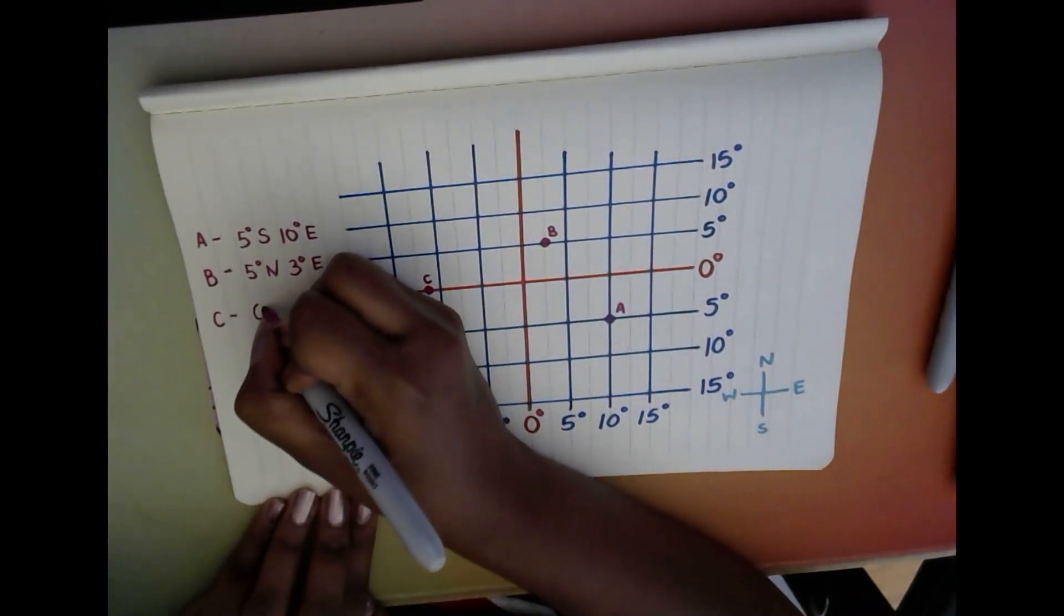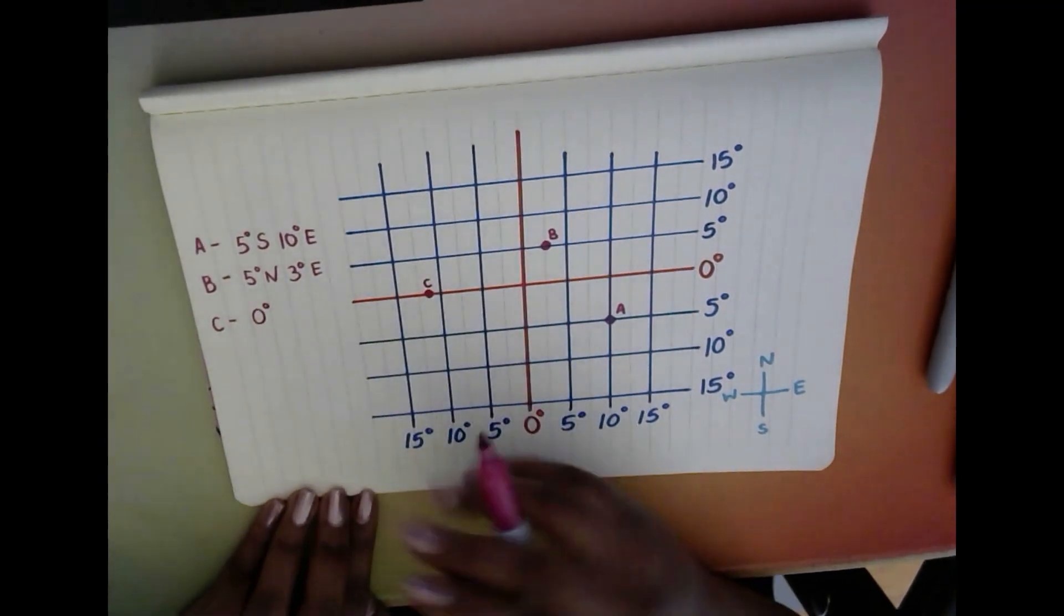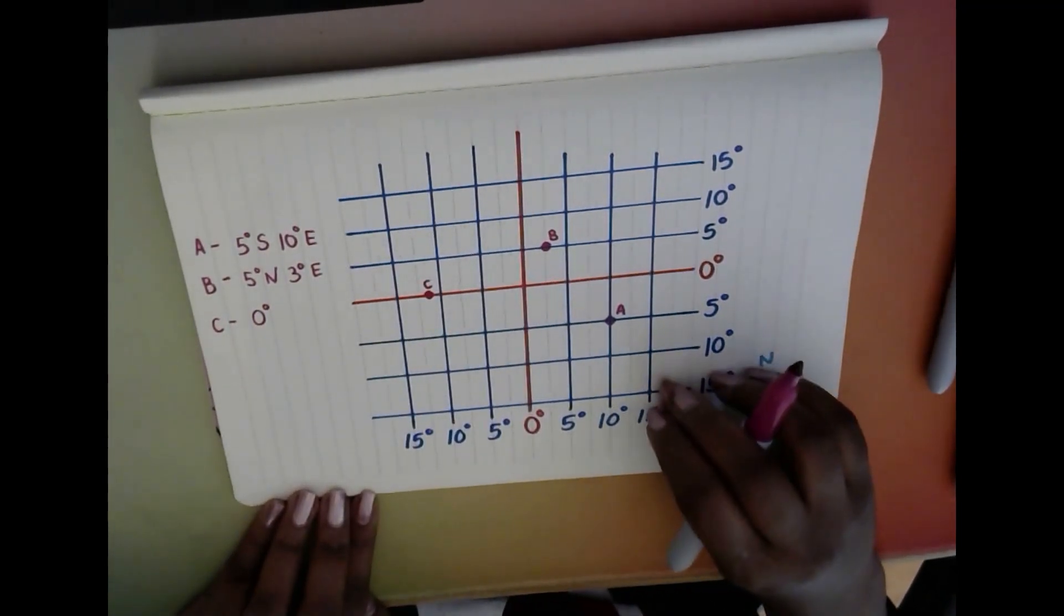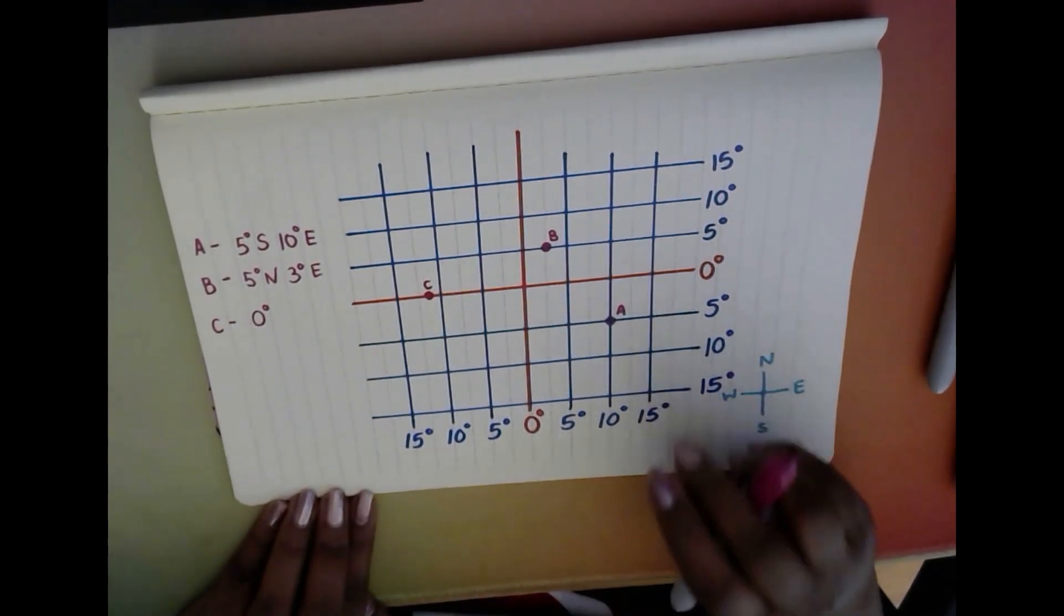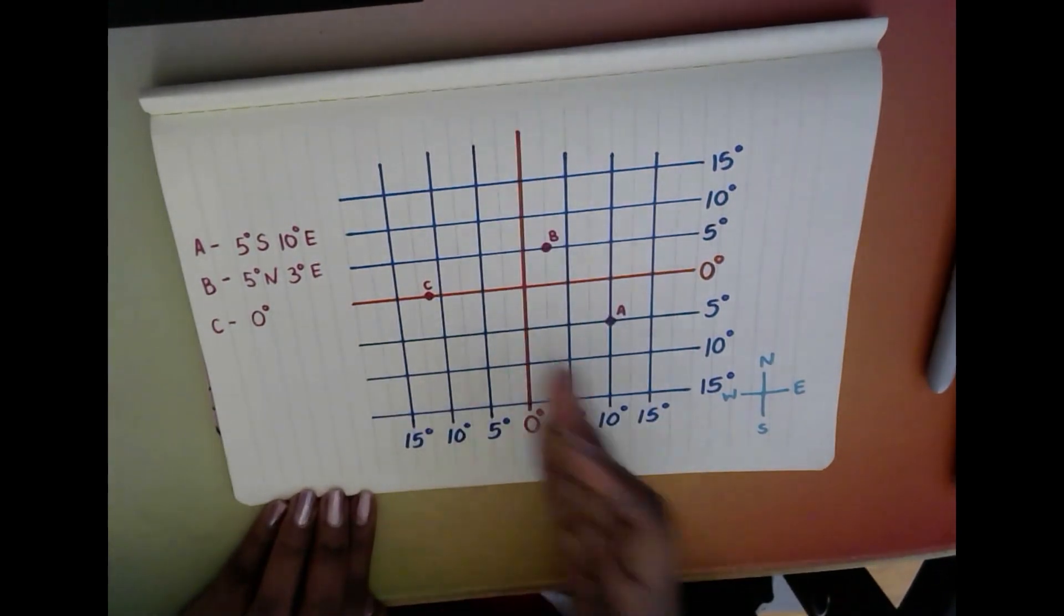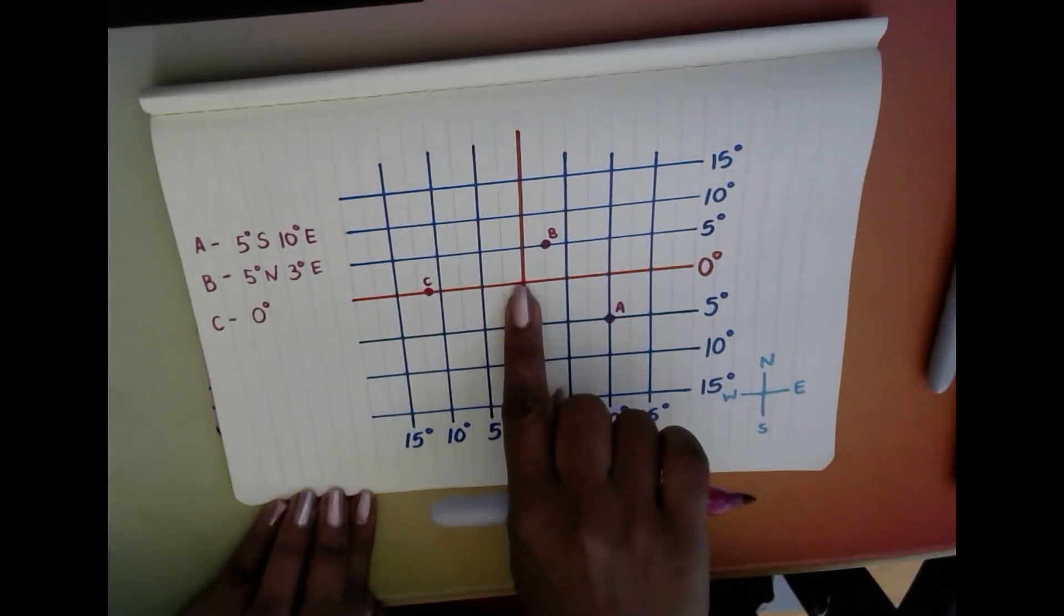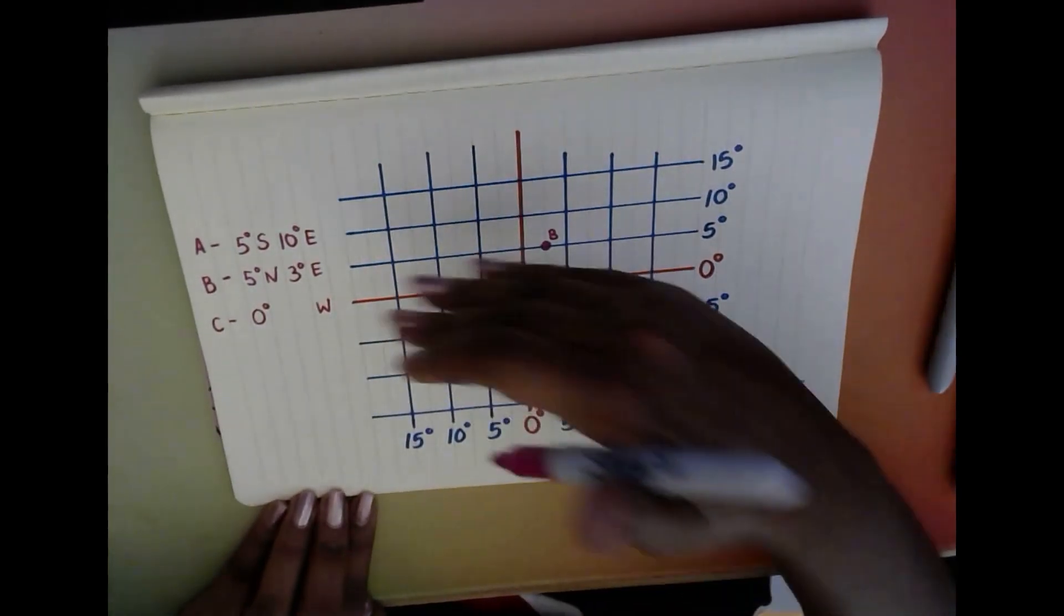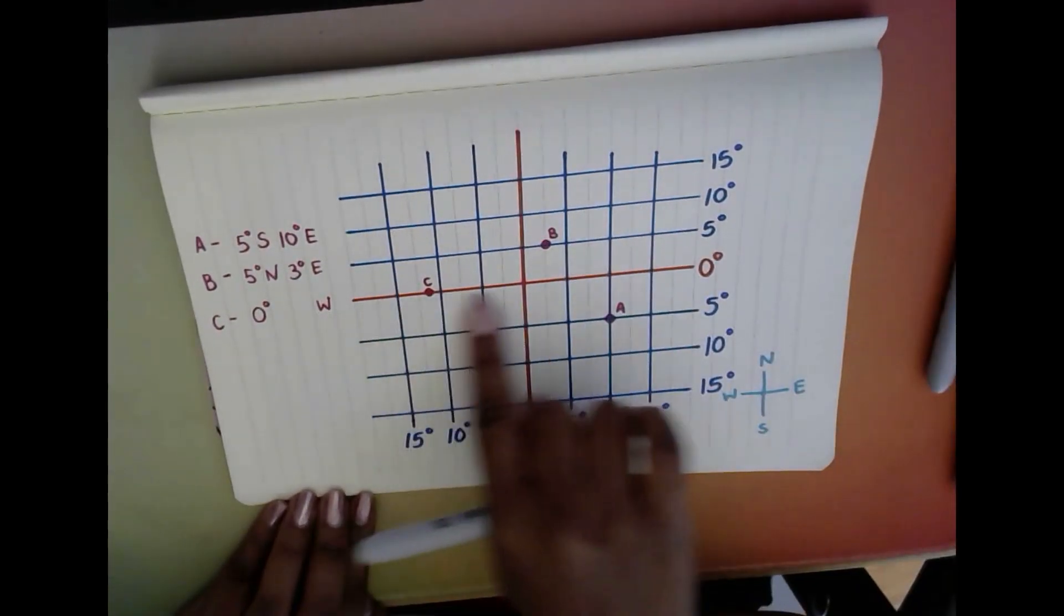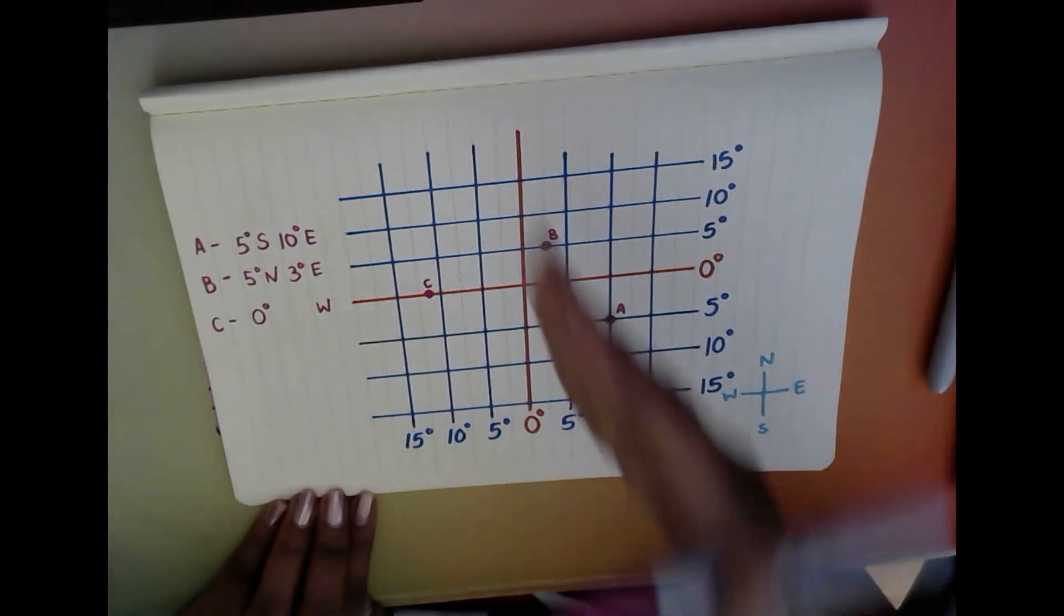But we can continue like normal for the rest of it. So when we look at our longitude, is it in the east or the west? We can see it's on the left-hand side, so it must be west. We don't have to work out latitude because we've already written down our zero degrees.